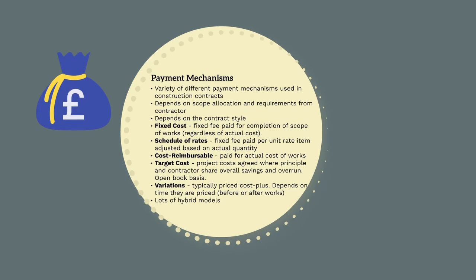Fixed cost is one of the most common forms of payment mechanisms. It means the principal pays the contractor a fixed lump sum to complete a given scope of works — the contractor is paid a fixed fee regardless of the actual cost. So if a contractor quotes $2 million to build a bridge, they get paid $2 million, regardless of whether the bridge costs $200 million or $200,000 — assuming, of course, that the scope remains the same. Fixed cost contracts result in the greatest risk transfer to the contractor.